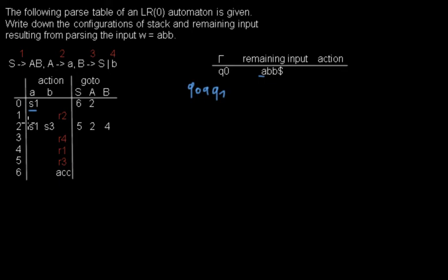Then now I'm in Q1. The only thing I can do... the remaining input. Now the remaining input is BB and dollar sign because I shifted the A, and the action was a shift into Q1.